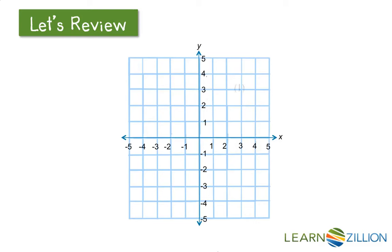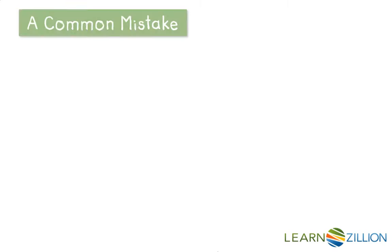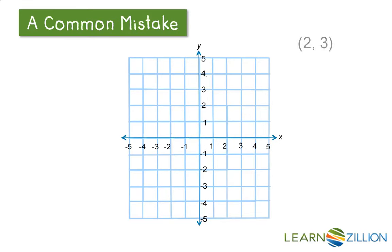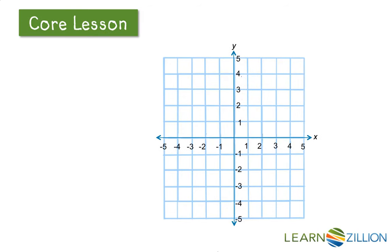Let's review. Here is our coordinate plane with our quadrants numbered and our positive and negative labeled. A common mistake is plotting a point incorrectly. You should go over and then up, not up and then over. So here we have the point 3, 2 in quadrant 1.